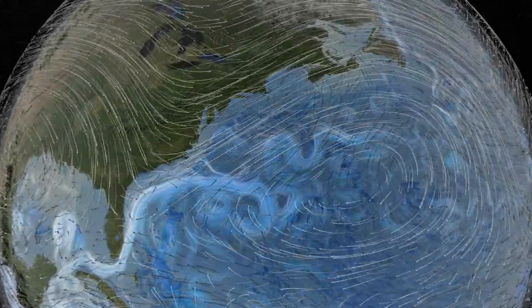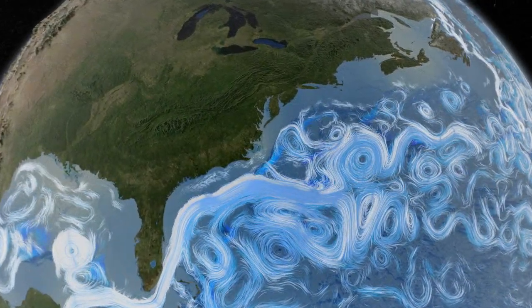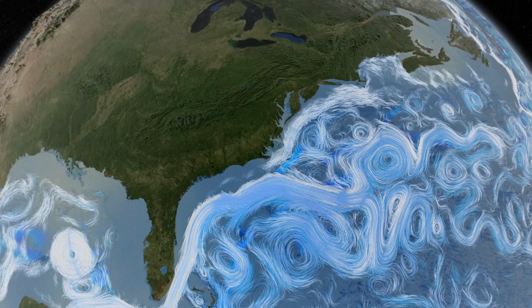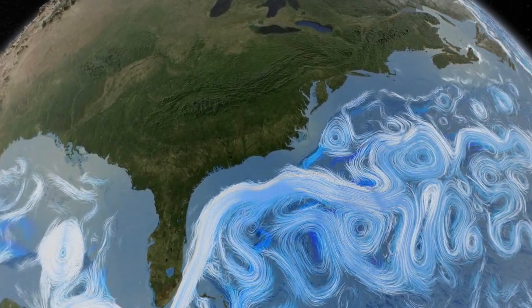Wind currents drive surface ocean currents. This computer simulation shows the Gulf Stream winding its way along the coast of North America.